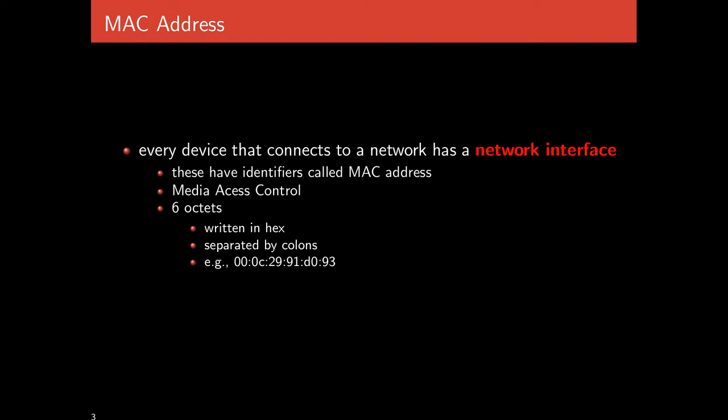A MAC address is a serial number assigned to every single piece of networking hardware. They're called media access control, and it is six octets written in hex and separated by colons. These serial numbers allow actual hardware to be uniquely identified, and can therefore be used as a way of separating, isolating, and recognizing different computers.